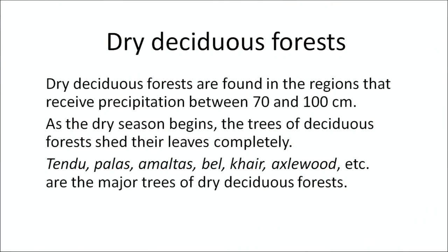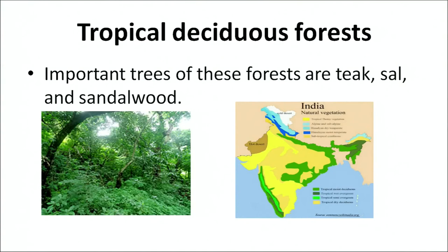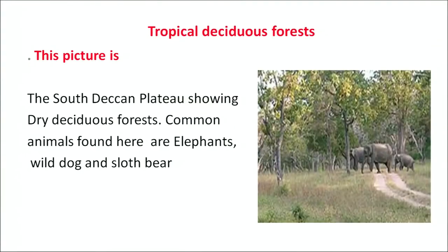The moist deciduous forests are found on the eastern Ghats, Chhota Nagpur Plateau, eastern parts of Madhya Pradesh, South Bihar and West Orissa. The dry deciduous forests are found in regions that receive precipitation between 70 to 100 cm. As the dry season begins, the trees of the deciduous forests shed their leaves completely. Tendu, Palash, Amaltas, Bael, Khair and Axlewood are the major trees of the deciduous forests. A map shows where exactly the dry and wet deciduous forests are located, and a picture shows the South Deccan Plateau of deciduous forests.